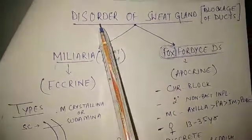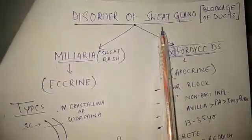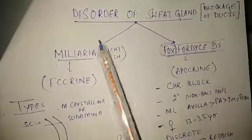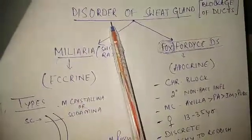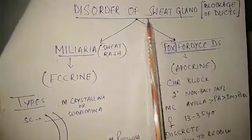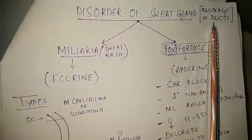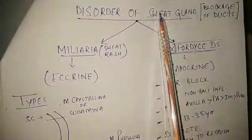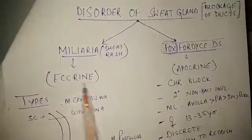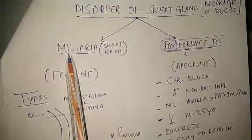Today we are going to discuss the disorders of the sweat gland and disorders of the sebaceous glands. First, we focus on disorders of the sweat gland. Disorders of the sweat gland mostly arise because of blockage of the ducts of the sweat glands. When the ducts of the eccrine sweat glands get blocked, that condition is called miliaria, which is also called sweat rash.